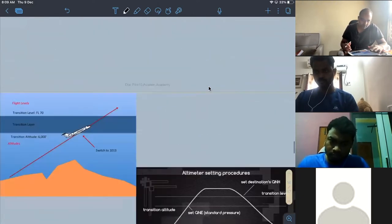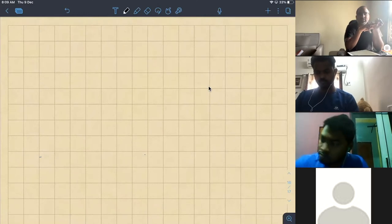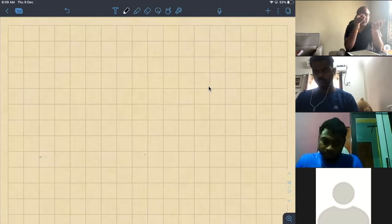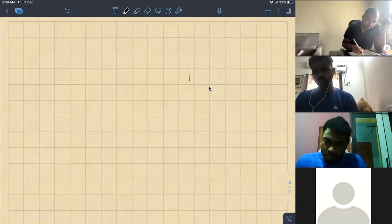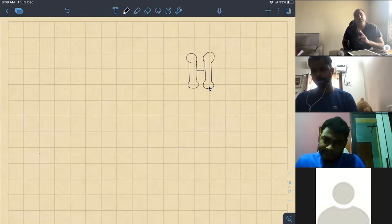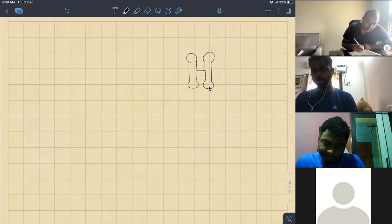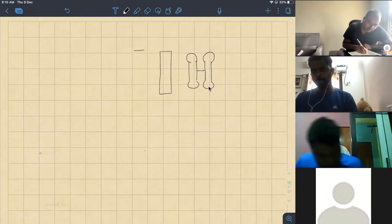See, in any altimeter, the principle is same. That is, decrease in pressure with height. So, that should be measured by capsule only. So, in this altimeter also, there are capsules. Let's say these are capsules. They are multiple and arranged in series as in sensitive altimeter. Now, there is something called as I-bar and there is something called as E-bar.